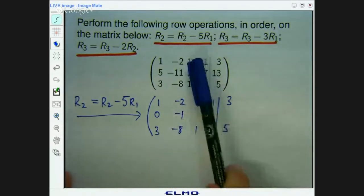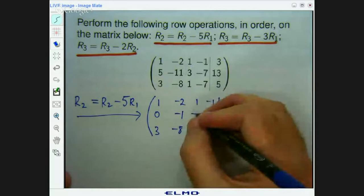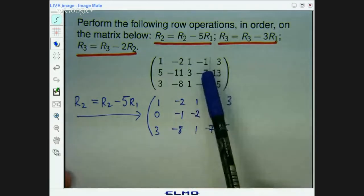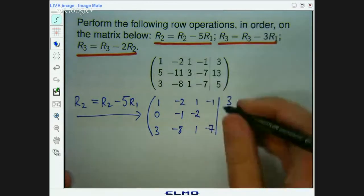3 minus 5 times 1, negative 2. Negative 7 minus 5 times negative 1. So that's negative 7 plus 7, negative 2.